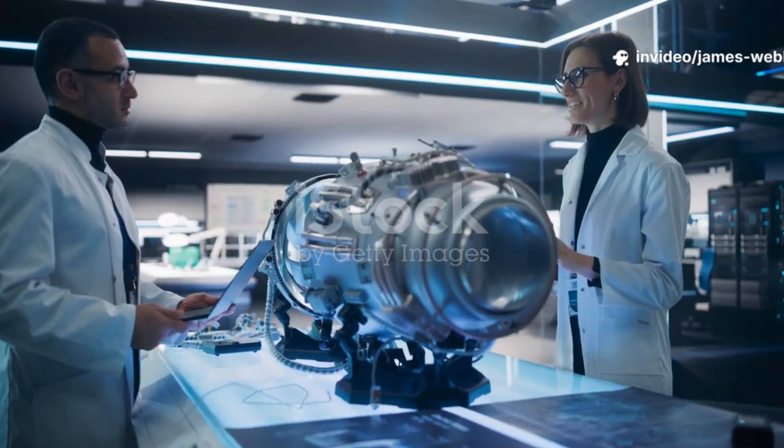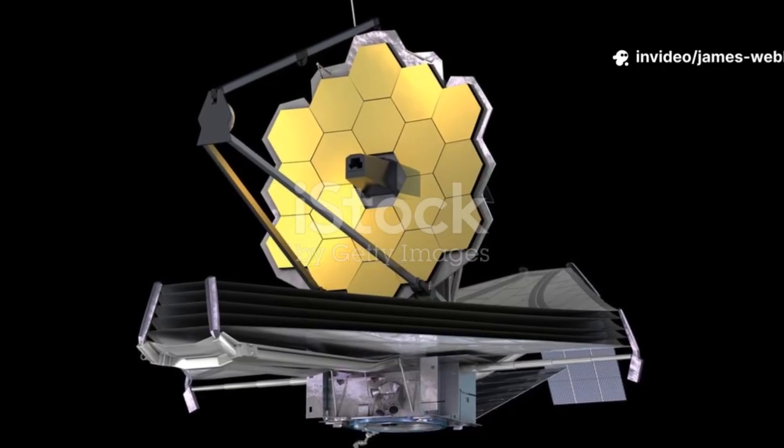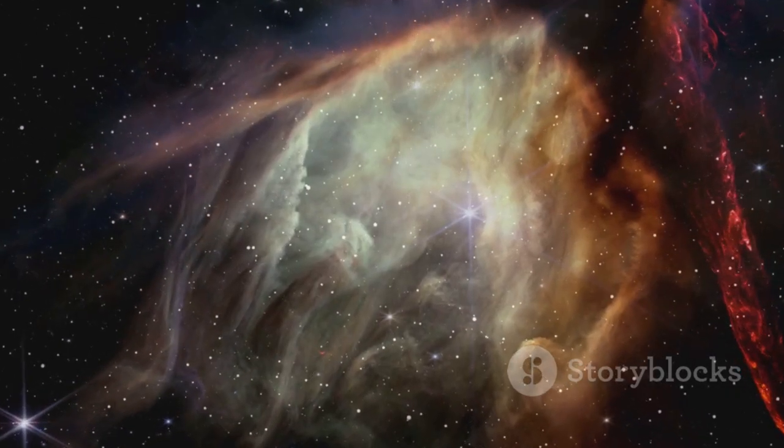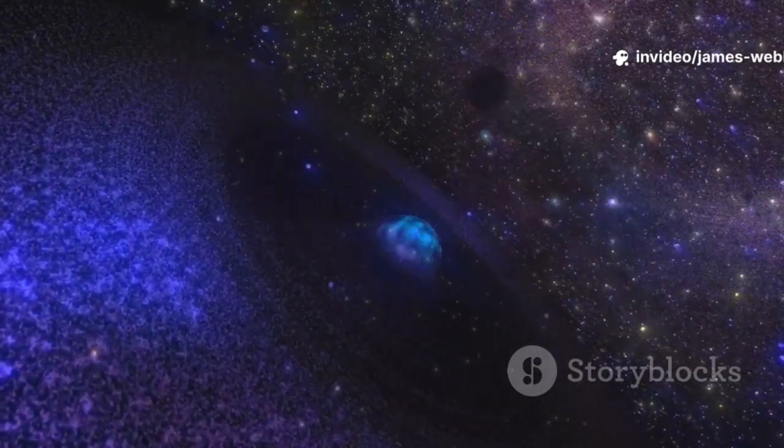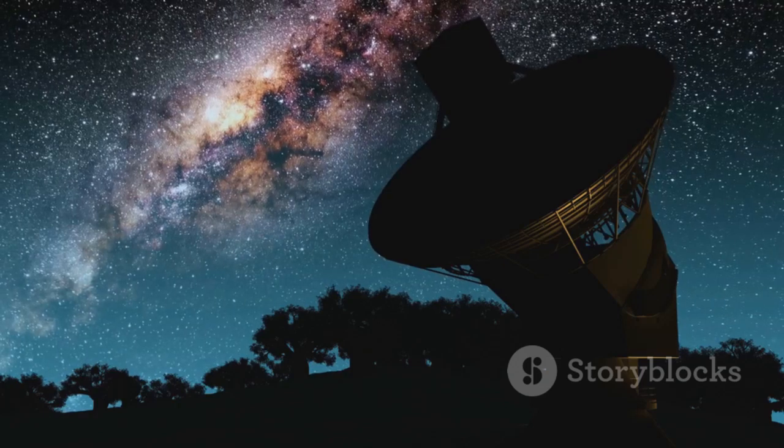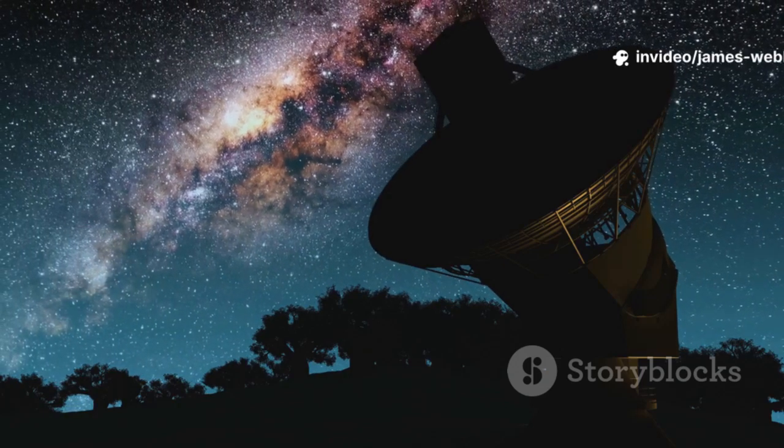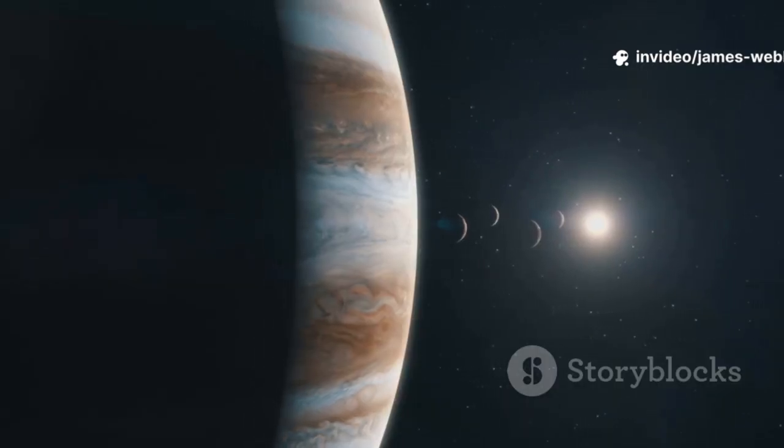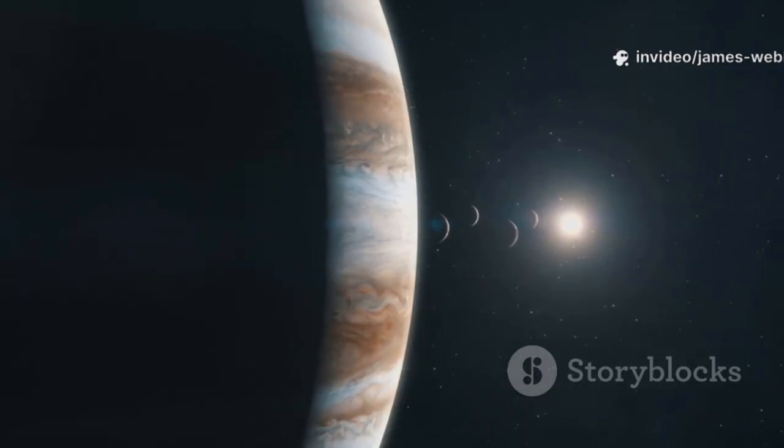For decades, astronomers and planetary scientists have worked with a standard model for how solar systems form. It starts with a giant cloud of gas and dust. This cloud collapses under its own gravity, forming a star at its center. The leftover material flattens into a rotating disk. Within this disk, small particles clump together, growing into larger and larger bodies—planets, moons, asteroids. We believe this process, with just a few minor variations, was likely the same across the galaxy. We based our cosmic recipe book on what we could observe in our own solar system.